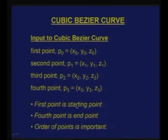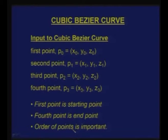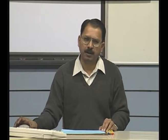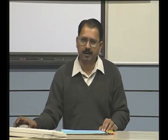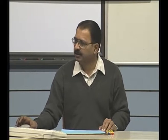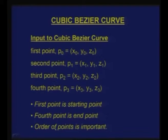The curve passes through the first and last control points, while the intermediate control points define the curve without being interpolated. The order of these points is important — the first and last are interpolation points through which the curve passes, which is one of the key properties of Bezier curves. If you change the order of the points, you get a different curve.